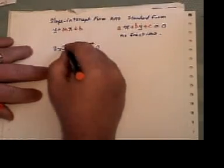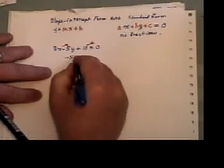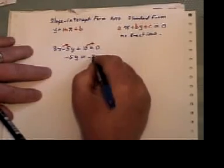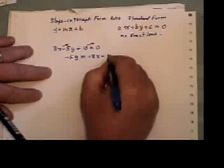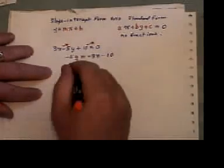In order to solve for Y, what I would like to do is take everything that doesn't have the letter Y onto the other side. Please remember that this still will be minus 5Y. The 3X and the 10, they get their signs changed because they've crossed the border.